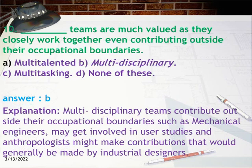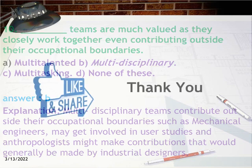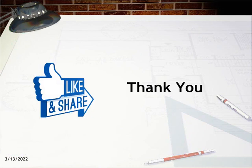Question 10: Which type of teams are much valued as they closely work together, even contributing outside their occupational boundaries? Answer: B, multi-disciplinary. Explanation: Multi-disciplinary teams contribute outside their occupational boundaries — for example, mechanical engineers may get involved in user studies, and anthropologists might make contributions generally made by industrial designers. Thanks for watching — comment for any suggestions, like, share, and subscribe.